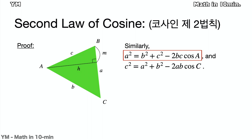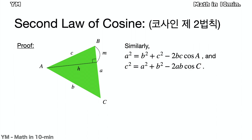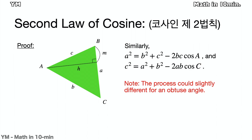Similarly, A squared equals B squared plus C squared minus 2BC cosine A, and C squared equals A squared plus B squared minus 2AB cosine C. There will be slight differences in the process of proof for obtuse angles.